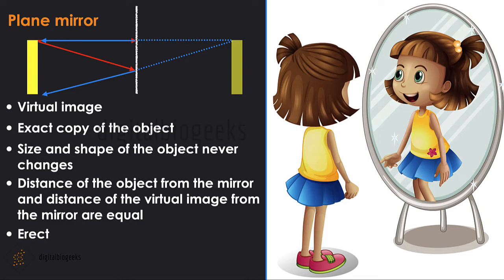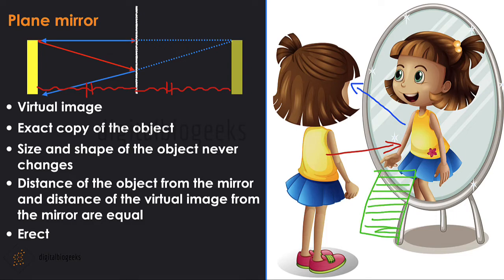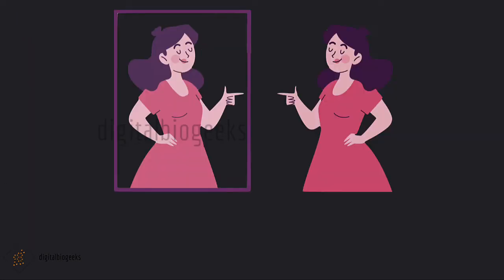These are the reasons why we use plane mirrors in our homes — so that we can see an image which is of the same size and shape as ours. If we place a screen in front of the mirror and try to get an image on the screen, we will not succeed, as the image formed in the plane mirror is always virtual.